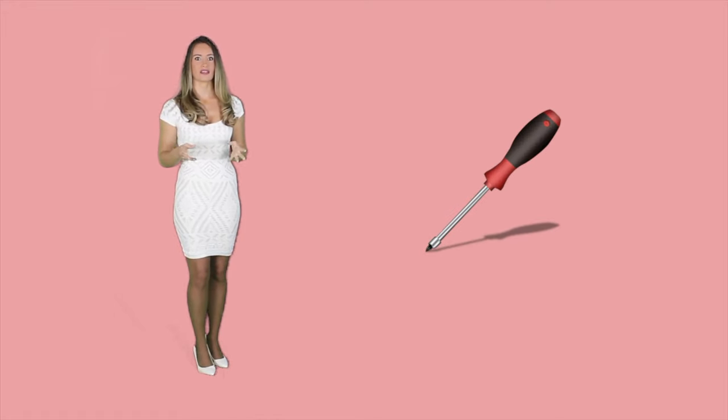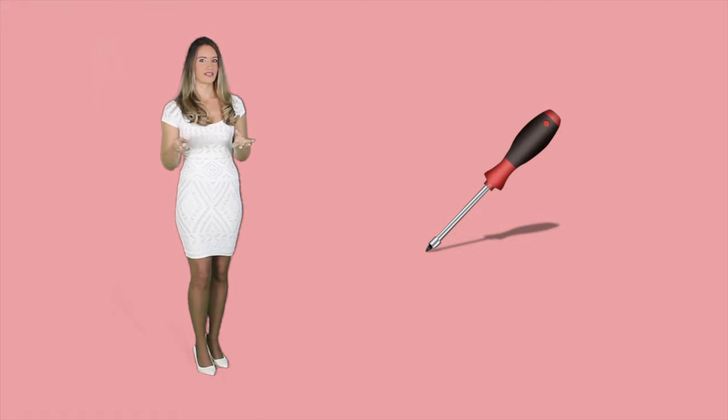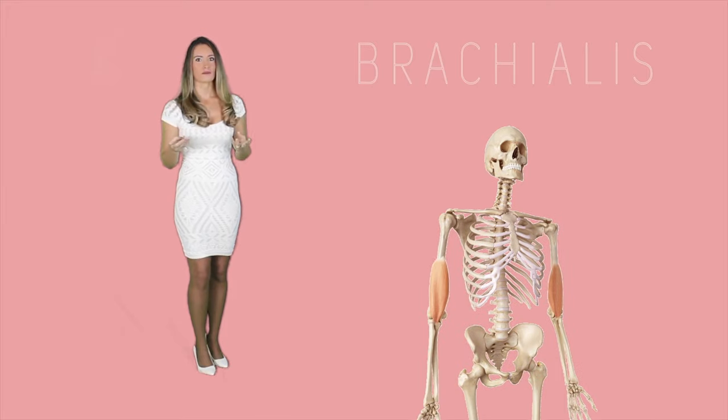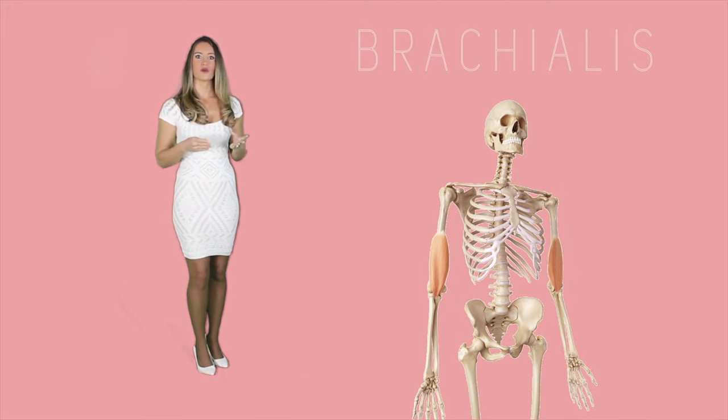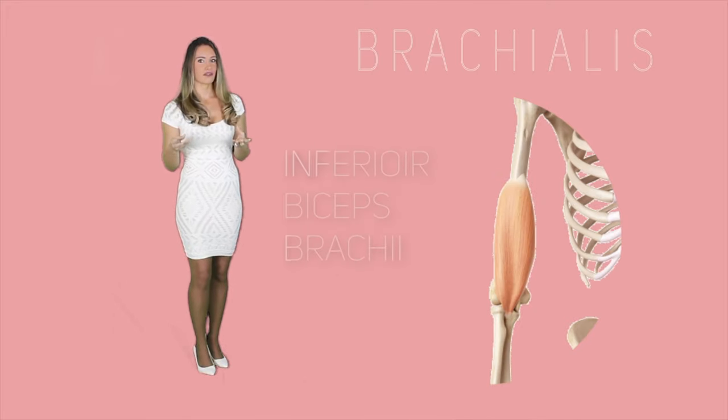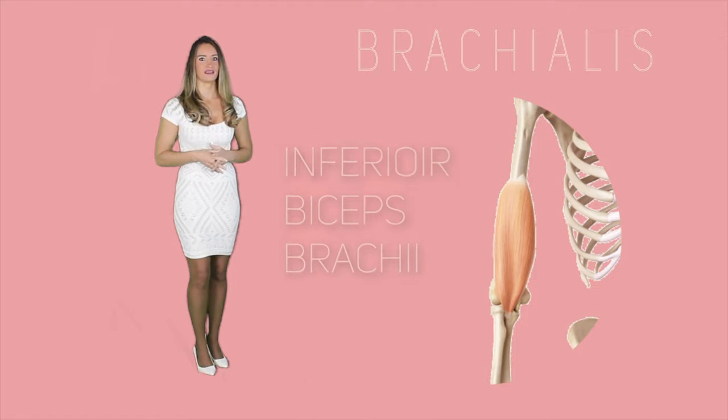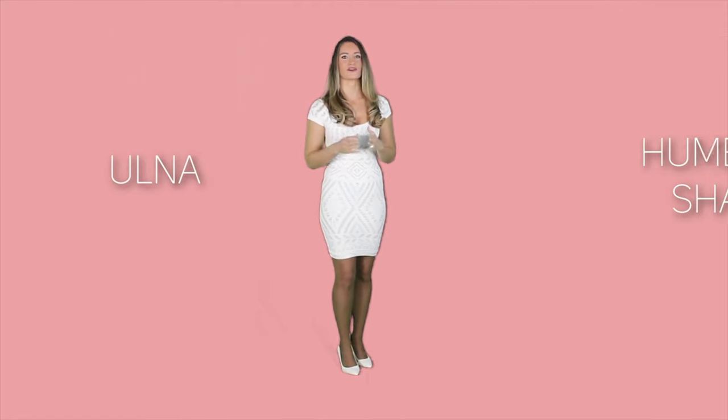Biceps brachii laterally supinates the hand — for example, when a person uses a screwdriver or opens a door using a doorknob. The brachialis is the second flexor forearm muscle. It links to the humerus shaft and lies inferior to the biceps brachii, connecting the ulna with the humerus shaft. Brachioradialis is the last of the flexor muscles and links the radius with the humerus, enabling flexion of the elbow.